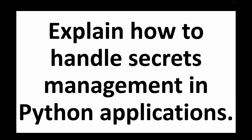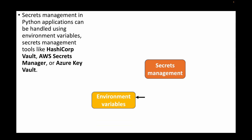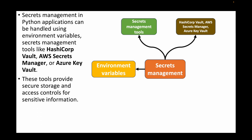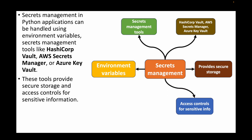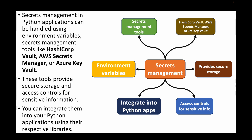The next question is: explain how to handle secrets management in Python applications. When working with any scripting you will definitely end up using secrets, so managing them efficiently is very important. In Python scripts we can use environment variables or secret management tools like HashiCorp Vault, AWS Secrets Manager, or Azure Key Vault to store our secrets and reference them in our scripts. These tools provide secure storage and access control for sensitive information, and we can integrate them using their respective Python libraries.